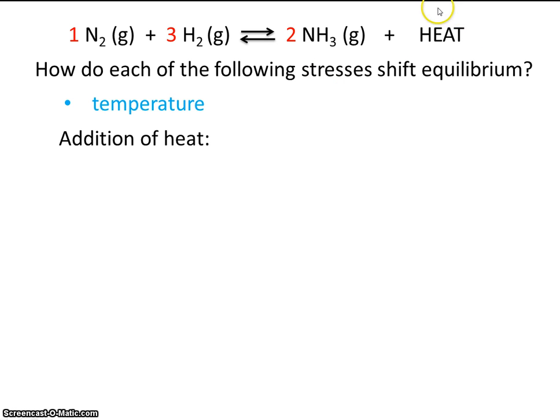Well, if we add more heat, the reaction will shift to the left to reduce the amount of heat. Because every time we make products, we make heat, because heat can be viewed as one of the products. So the way that we can make less heat is by making less products, and in fact, making more reactants. So the reaction shifts to the left.